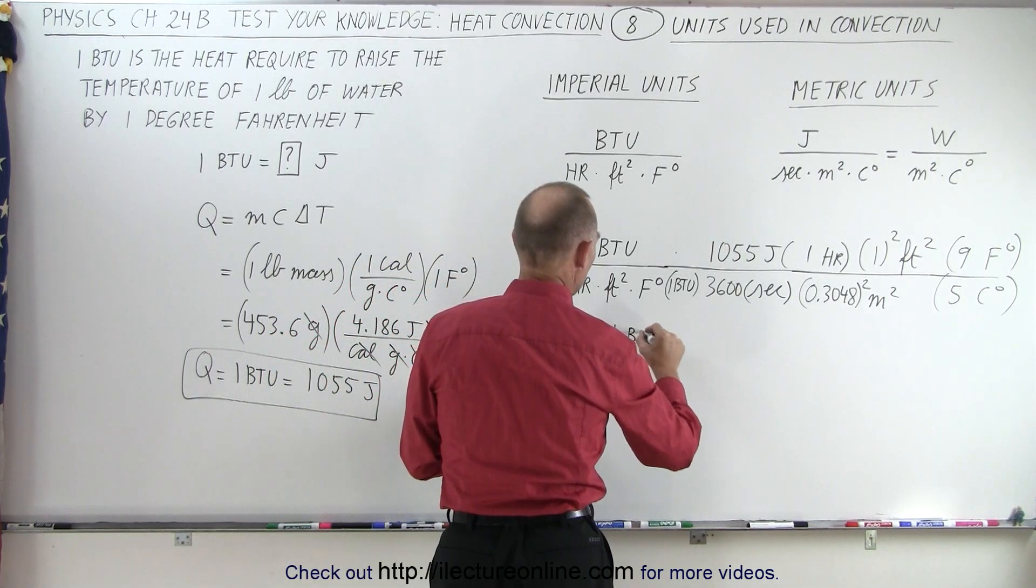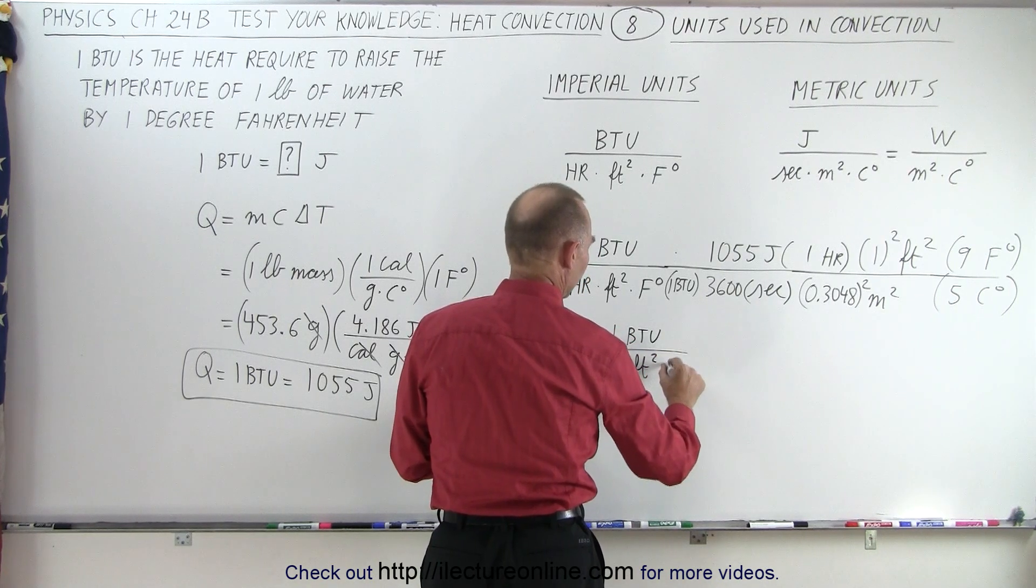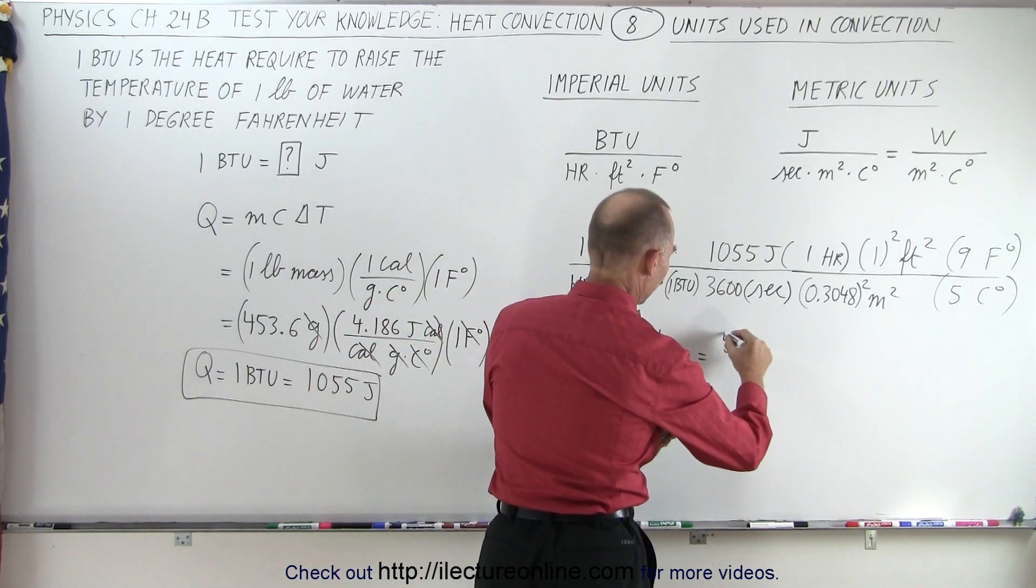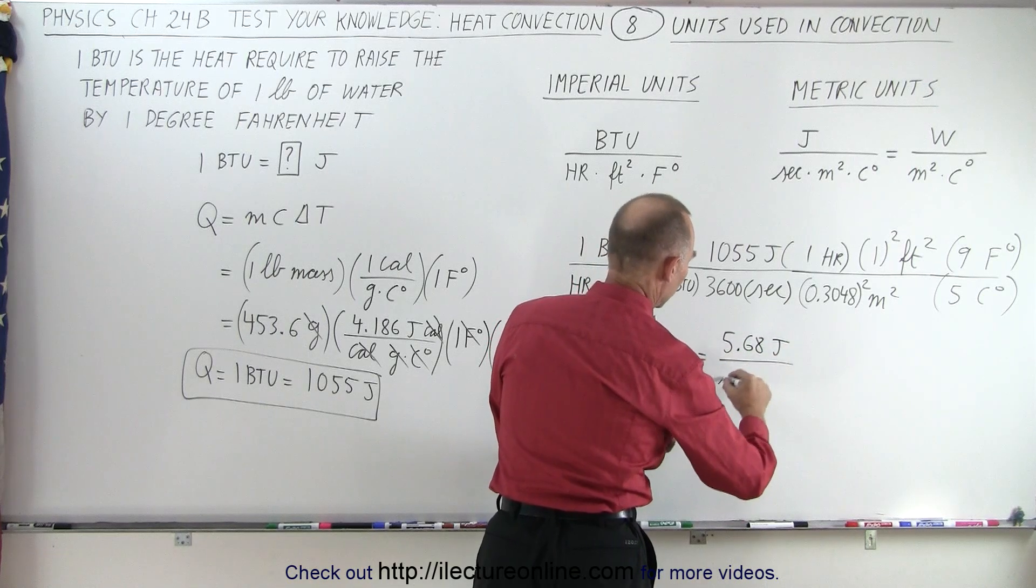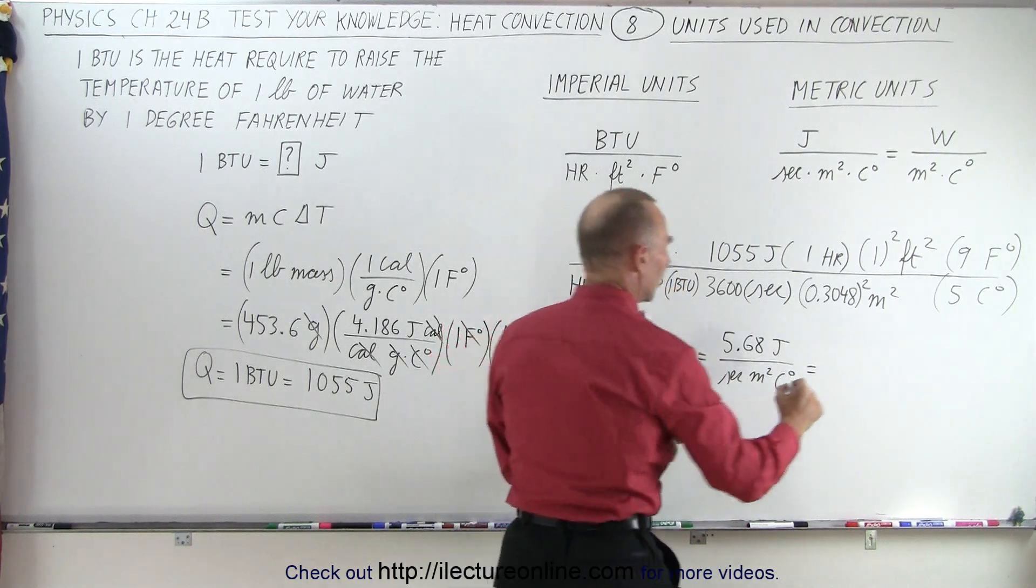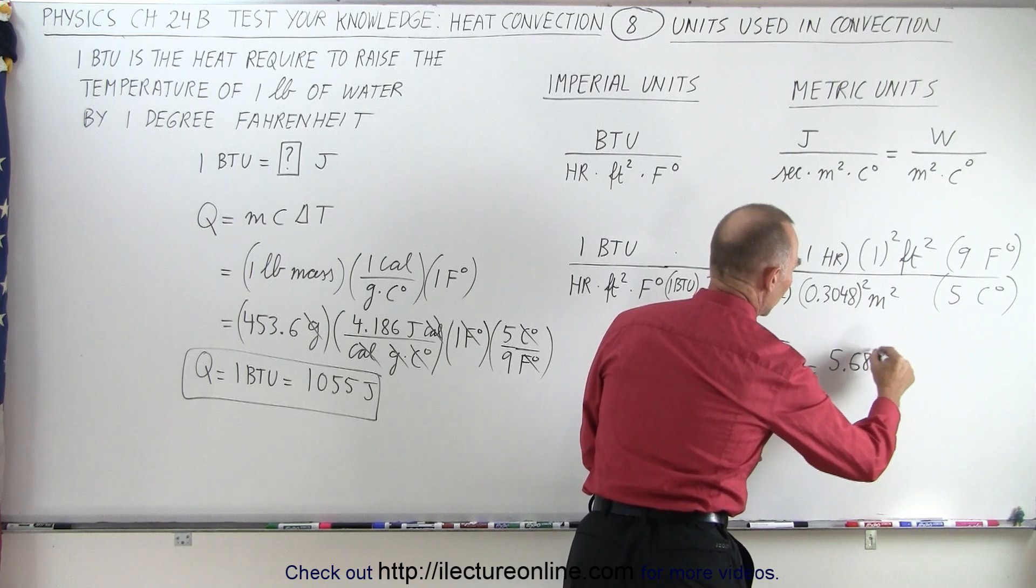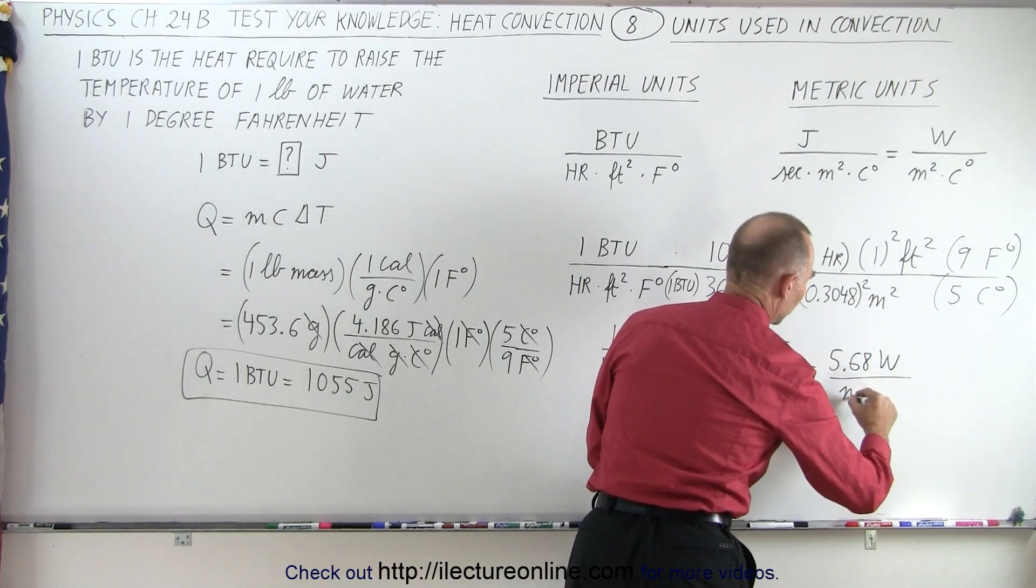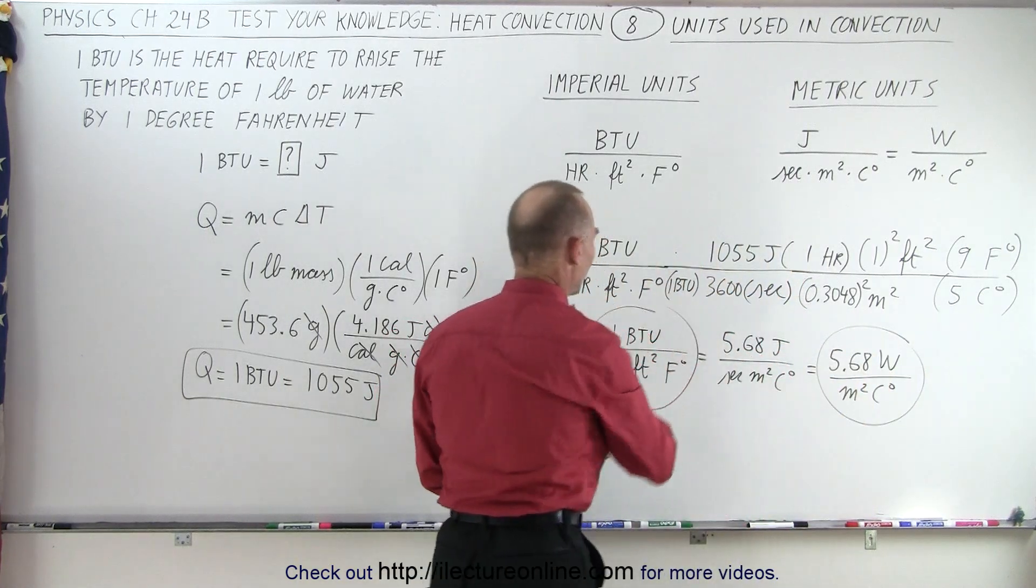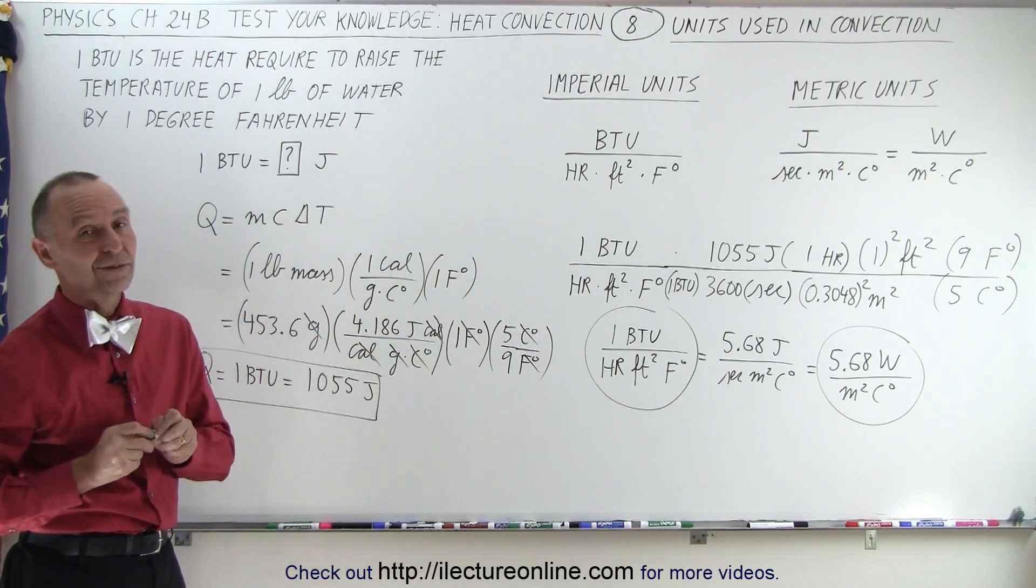So one BTU per hour per feet squared per Fahrenheit degrees is going to be equal to 5.68 joules per second per meter squared per centigrade degree, which means that it's equal to 5.68 watts per square meter per centigrade degree. And that is the equivalence of one BTU per hour per square feet per Fahrenheit degrees, just in case you're interested.